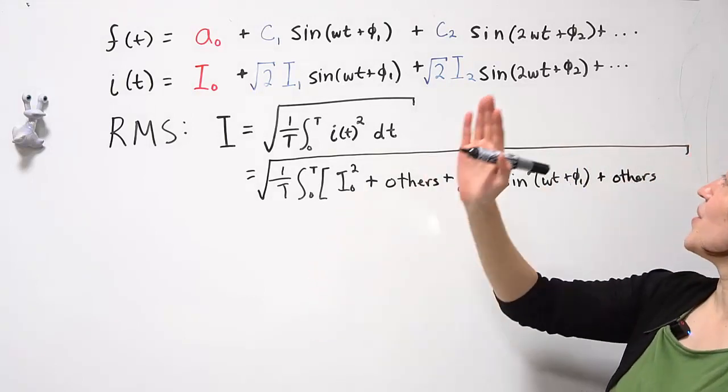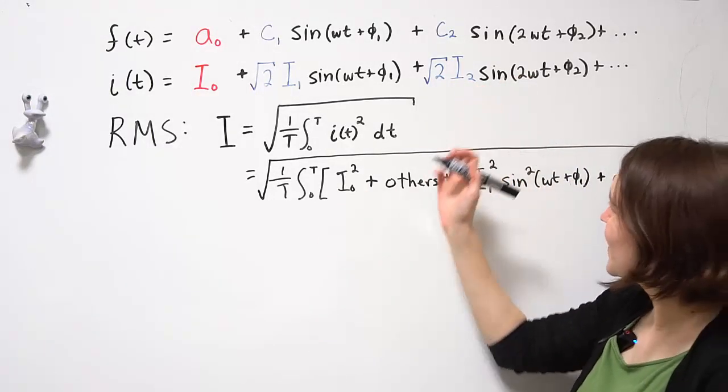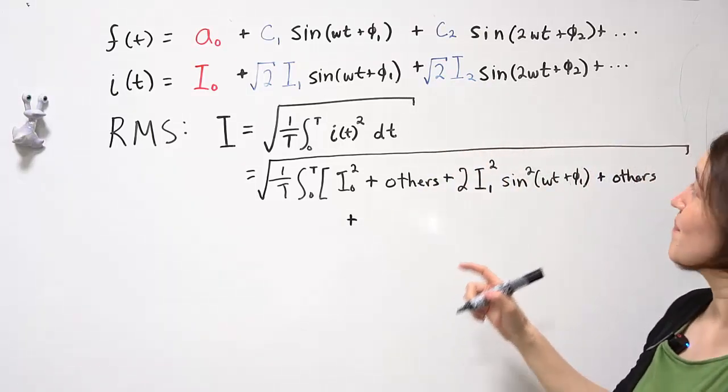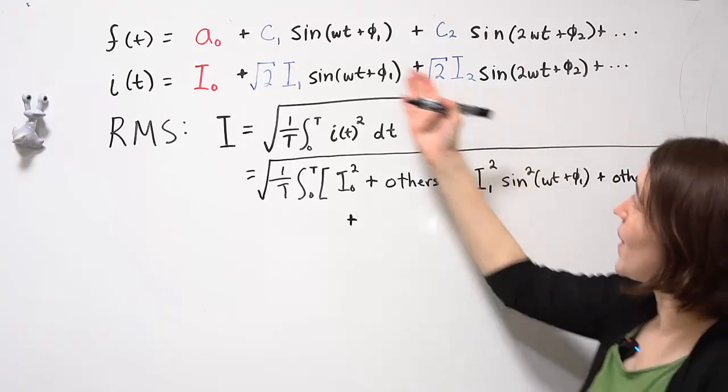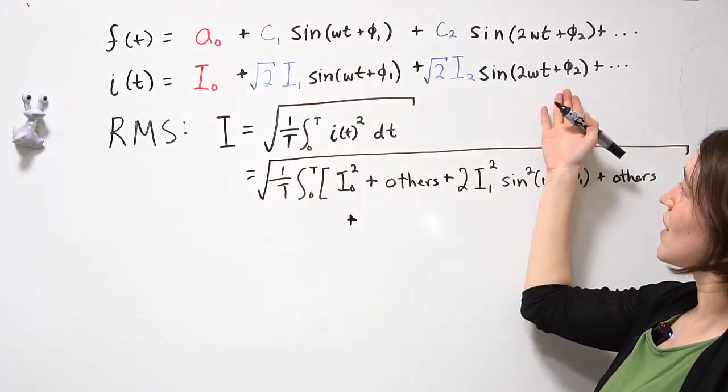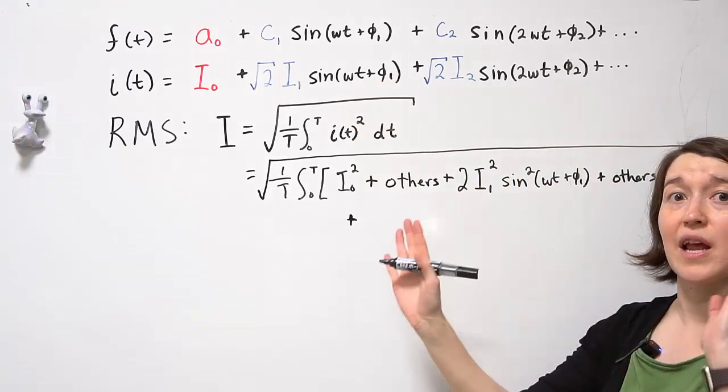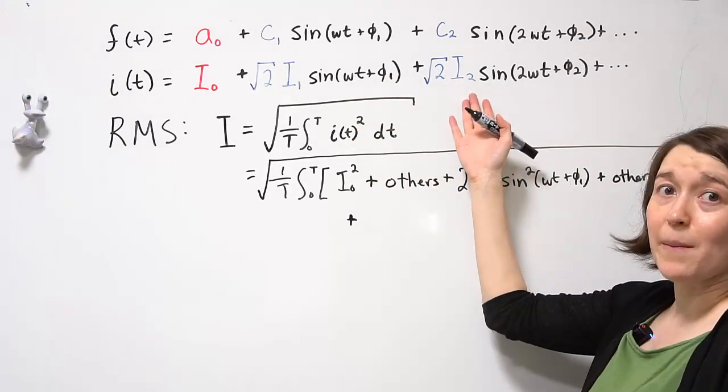And then we can go to the next term. I'm going to write it here. And we can do the same thing. This would be multiplied by this again. That's going to be zero because of the sine. It's going to be multiplied by this. Because the frequencies are different, they're going to cancel out. Then we would multiply it by itself.